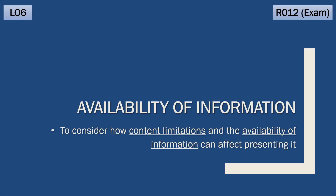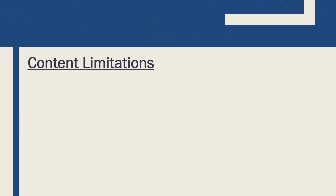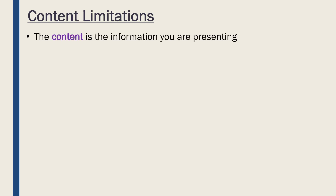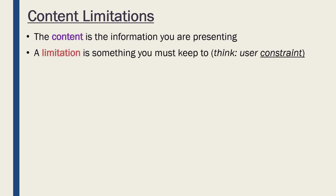We're now going to talk about content limitations and also more generally how the availability of information can affect us presenting it. So first of all, content limitations — let's break apart these two words. Content is the information we are presenting, so the information we are sharing and giving to other people. And limitation is something we must keep to, so a restriction.